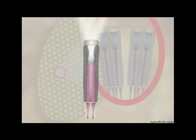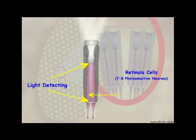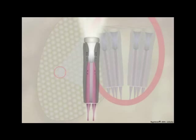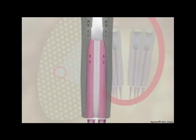The light-detecting apparatus of each ommatidium contains seven to eight light-sensitive photoreceptor cells called retinula cells. Retinula cells are actually photoreceptor neurons that detect wavelengths of light. The light-sensitive dendritic region of the retinula cell is the rhabdomere.